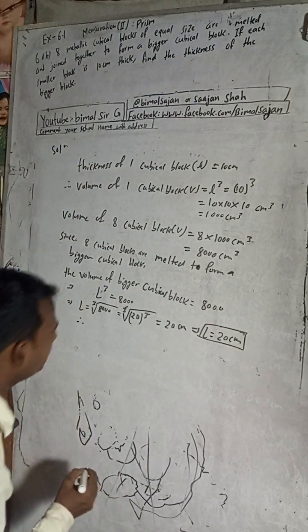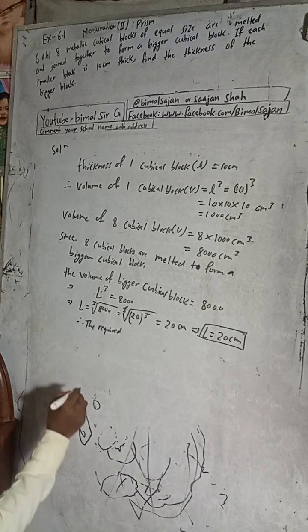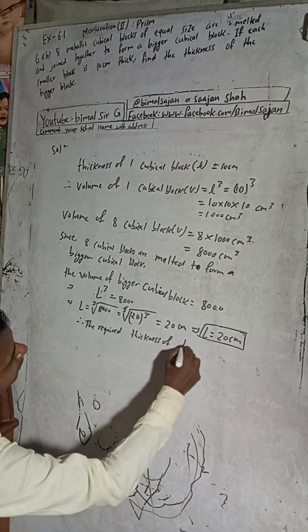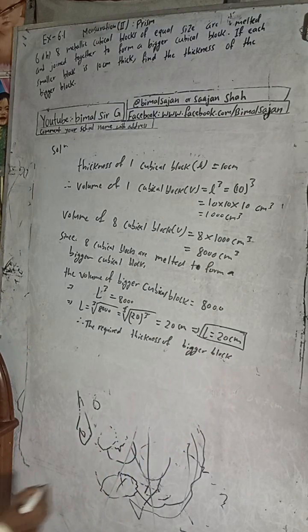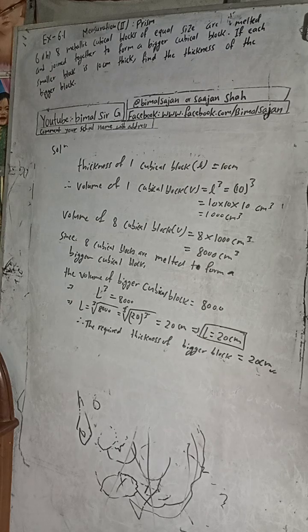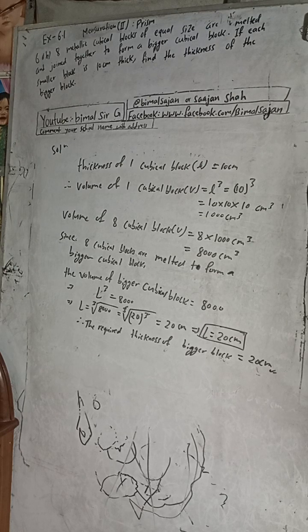Therefore the required thickness of the bigger block is equal to 20 cm. Since it is a cubical block, the length, breadth, height, and thickness are all equal. So this length of 20 cm means the thickness is also 20 cm. The required answer is 20 cm.